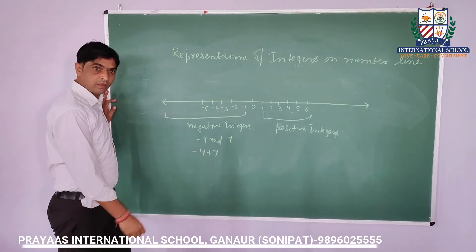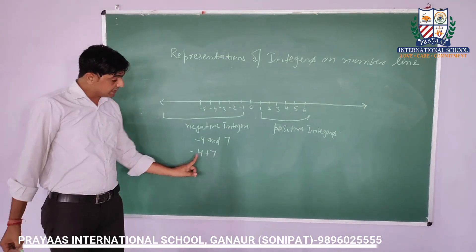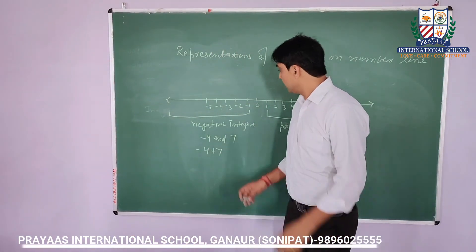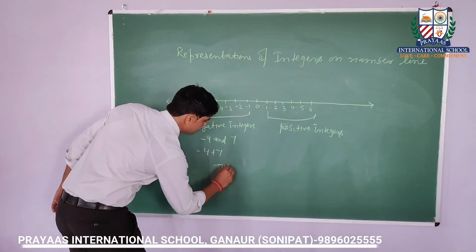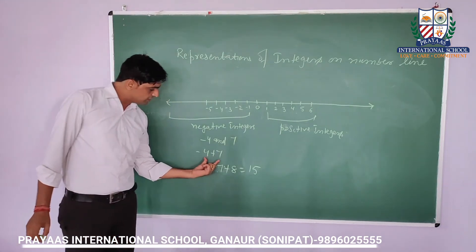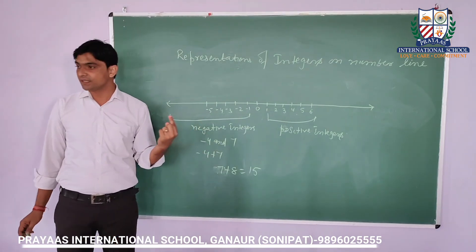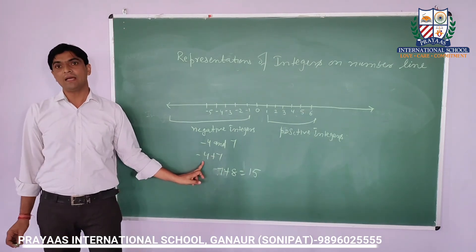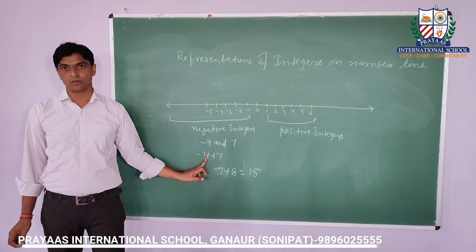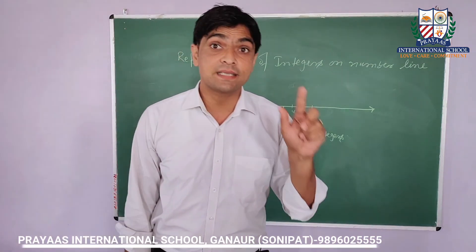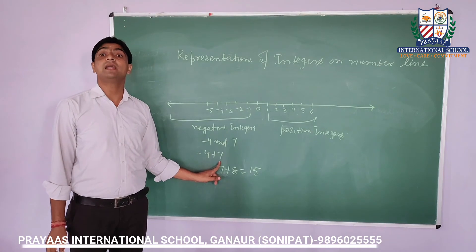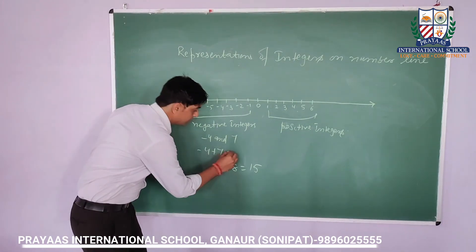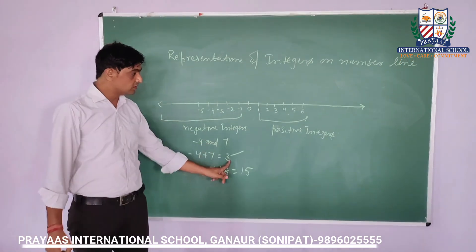If I add 7 and 8, you can easily give the answer. But if one number is positive and the second one is negative, then just use the larger number. Here 7 is the larger one. Subtract the smaller from the larger: 7 minus 4 equals 3. The sign will be the same as the sign of the larger number. Here 7 is the larger number, so the answer is positive 3. Notice that 3 is also an integer. So if we add or subtract two integers, the result is also an integer. This is the closure property of integers.